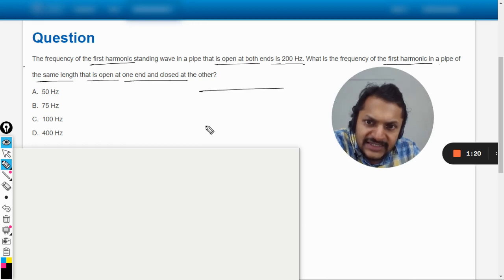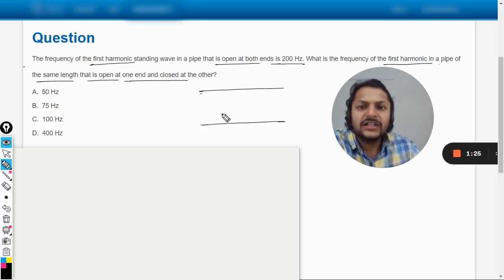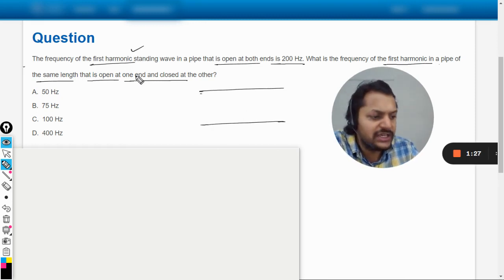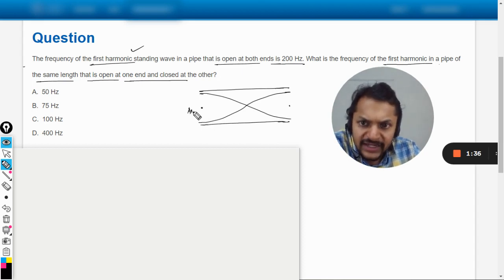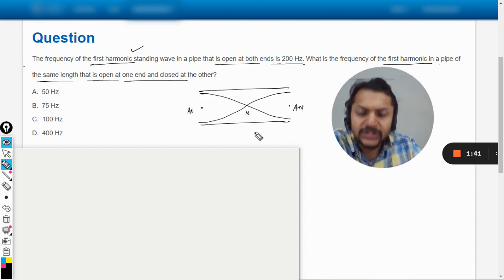So what is given in this question now? Let us say this is the pipe that they were talking about and we are talking about the first harmonic here. So how is the first harmonic created? The first harmonic will be created like this. So this and this is going to be anti-node and this point is the node.